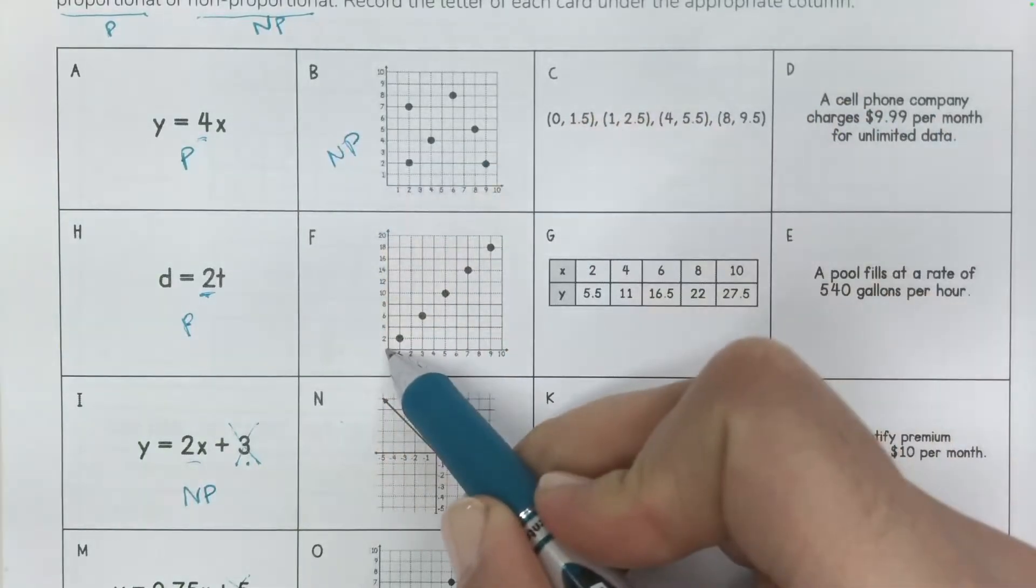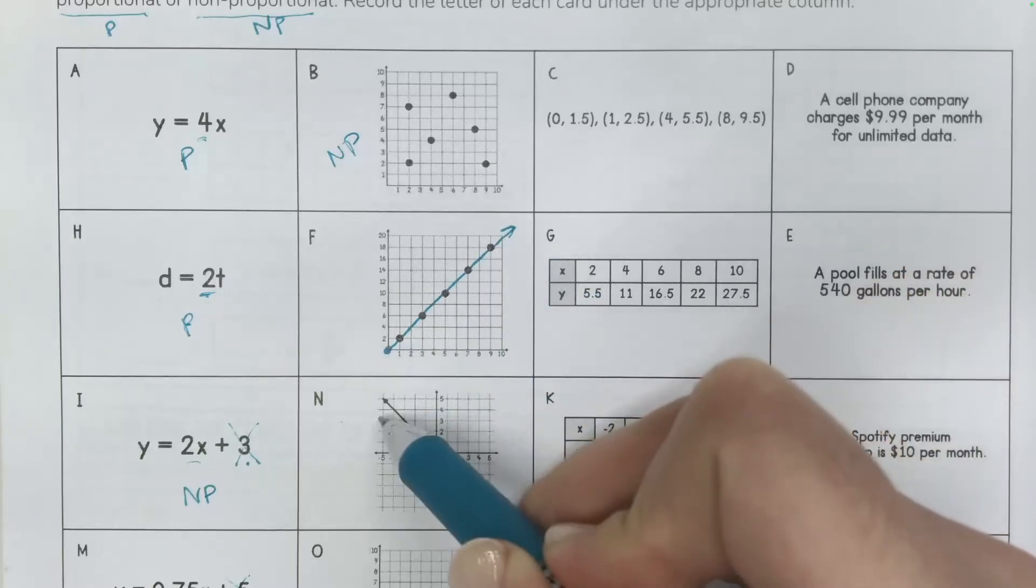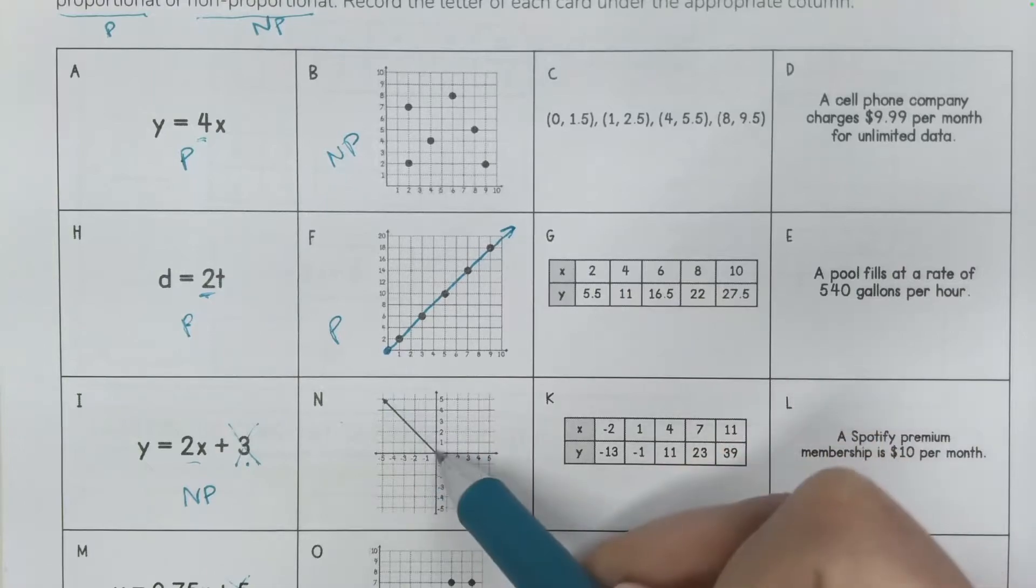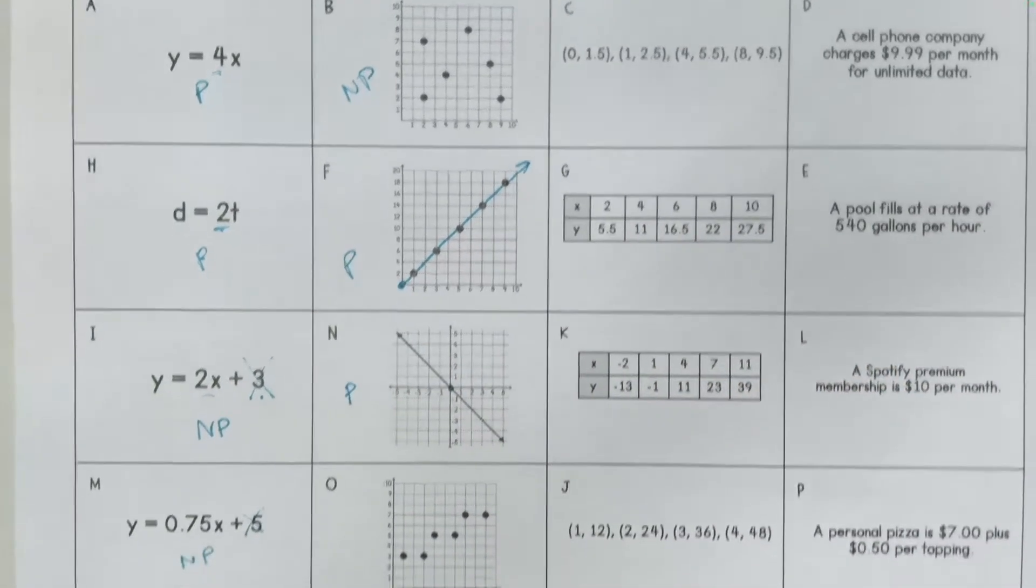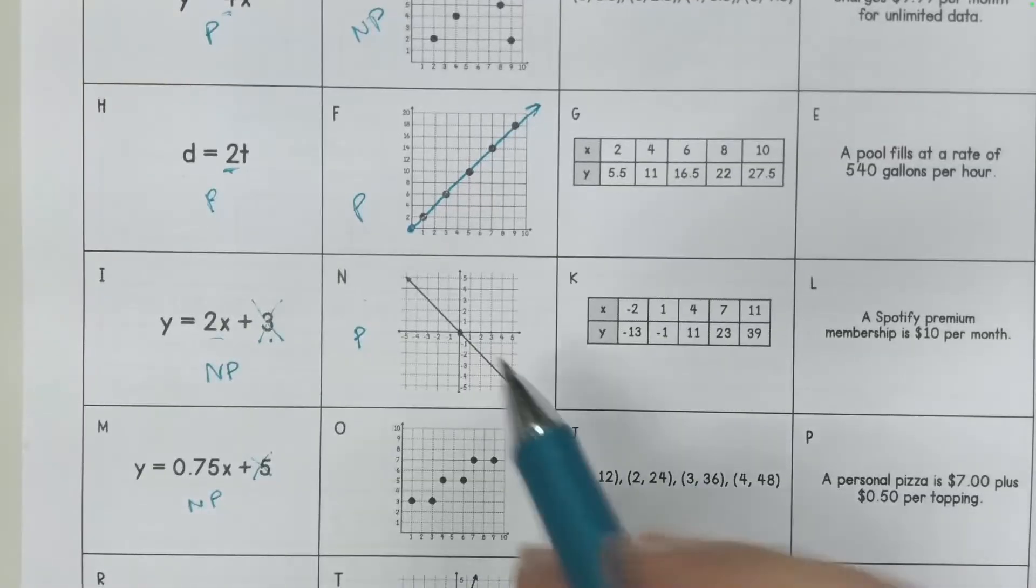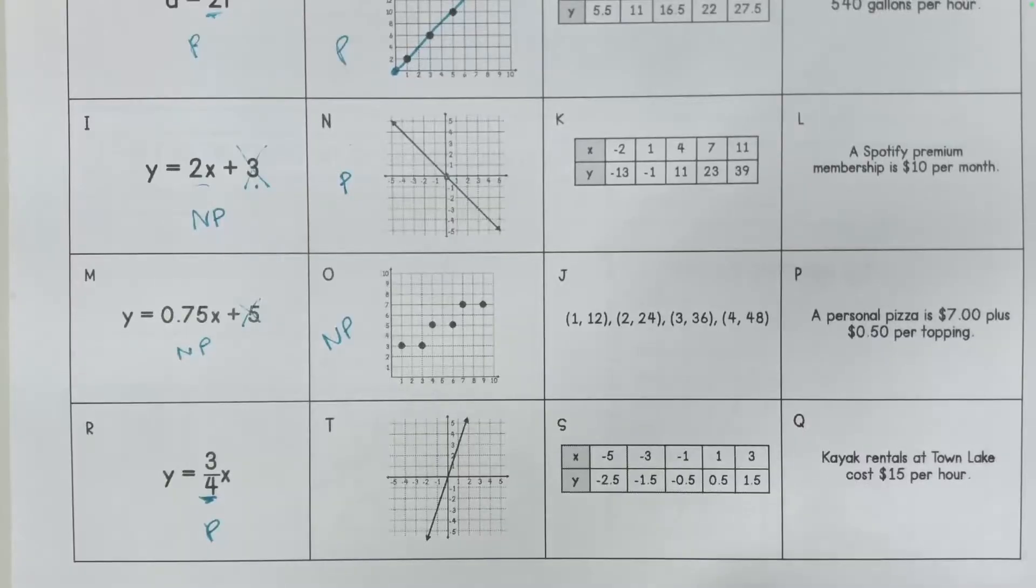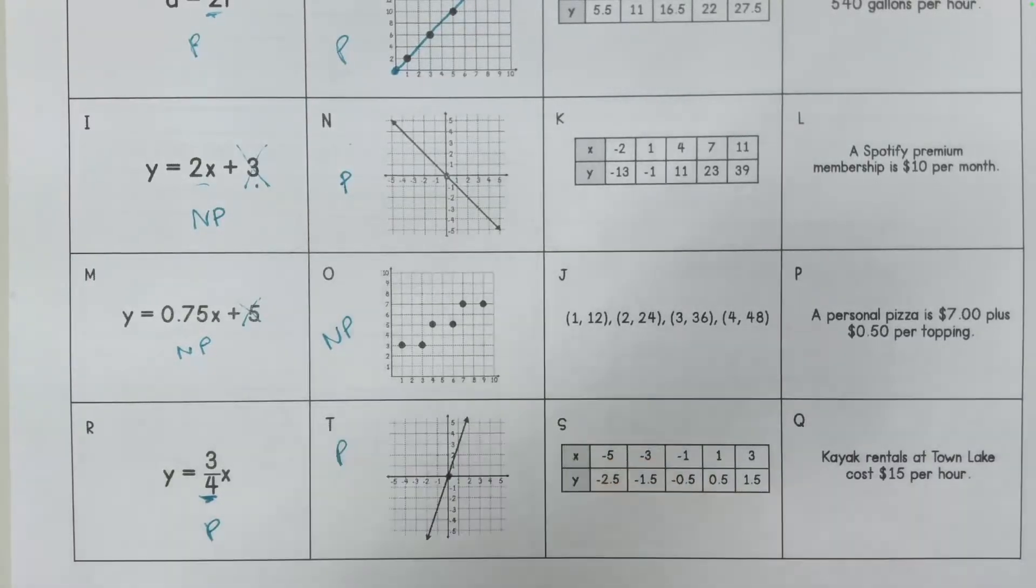If we were to draw a straight line through here, it's straight and it goes through the origin, so this is proportional. This is straight and it goes through the origin. This is proportional. This is some type of weird pattern, so this is not proportional. It doesn't go through the origin. And does this go through the origin? There it is, and it's a straight line, so this is proportional.